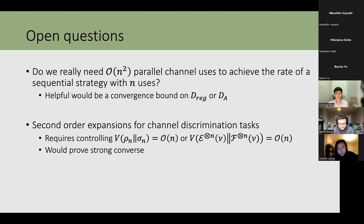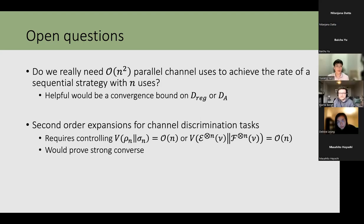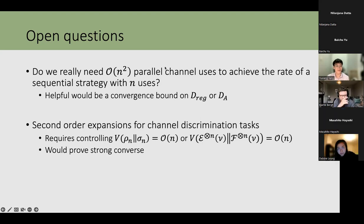[Nirajana]: In response to the comment about unitaries — it was already proved by Acin that unitaries can be perfectly discriminated even in the parallel case with a finite number of uses, so in that case both adaptive and parallel are equivalent.